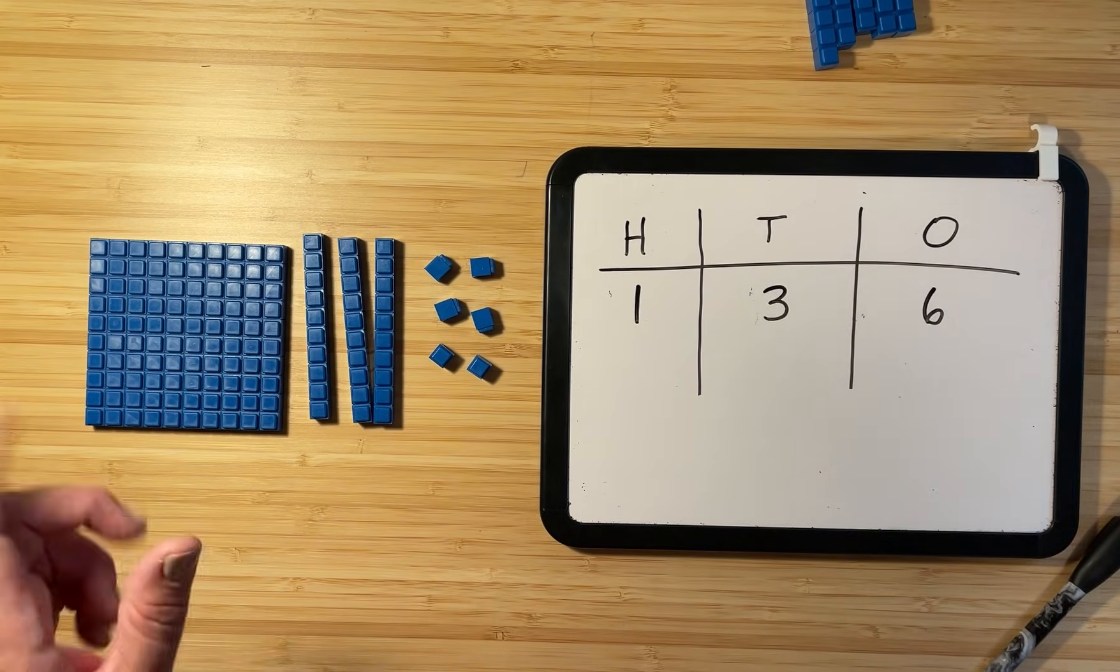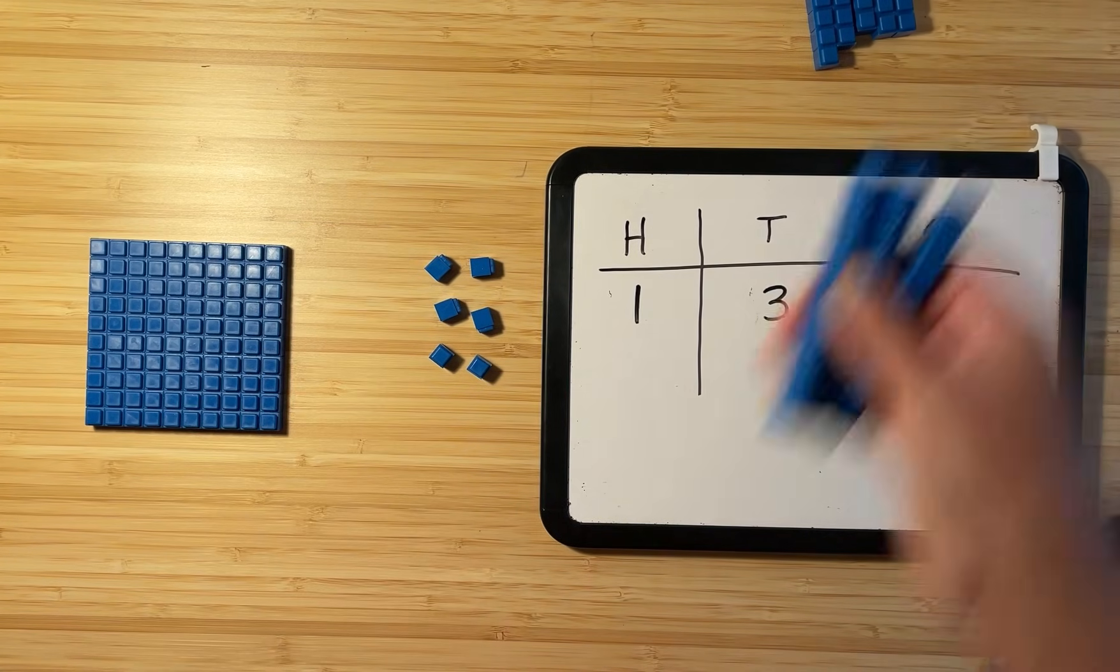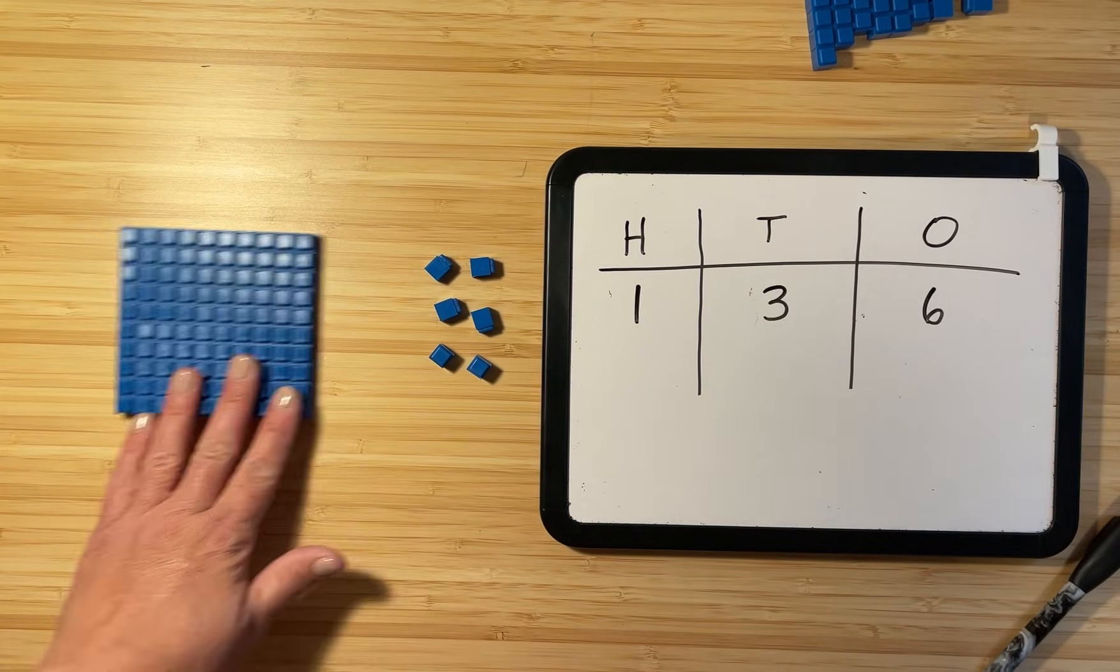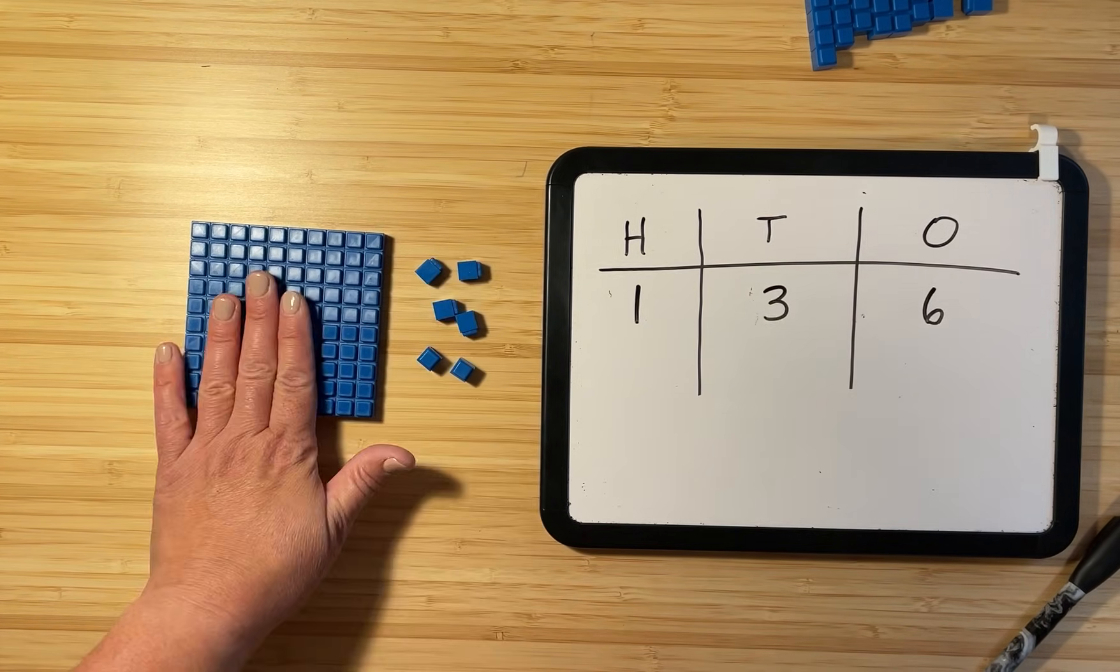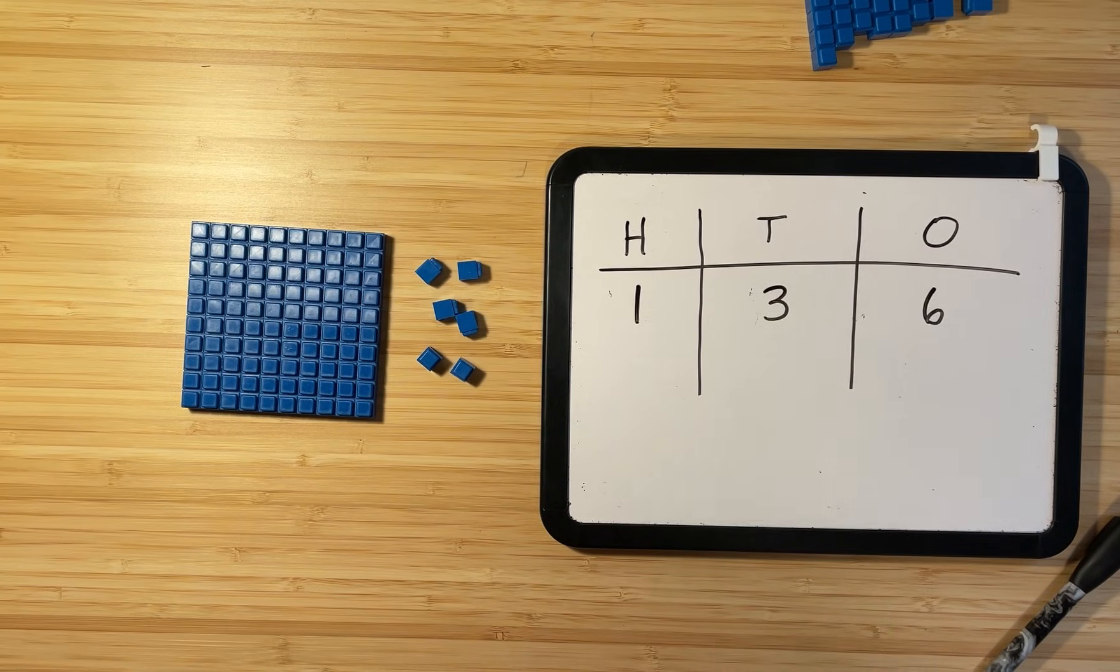Now, tricky question, what happens if I take away all the tens? And you can take away your tens too, so that you just have this left. How does this change our place value chart? I want you to think for a minute about this.